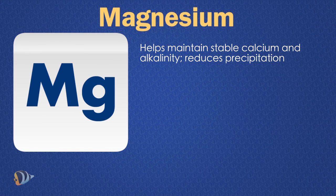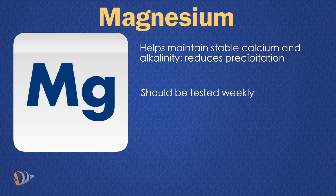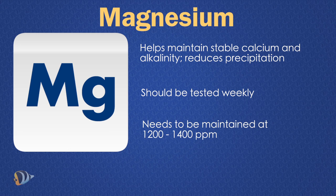Magnesium is important because it influences calcium and alkalinity levels and is also used by corals to grow and build their skeleton. Testing should be done weekly to monitor demand. Supplementation is often required, especially in aquariums that are heavily stocked with stony corals.